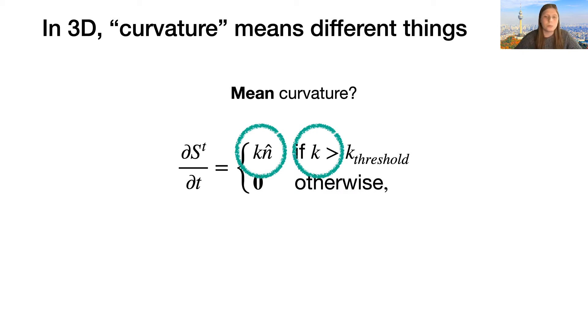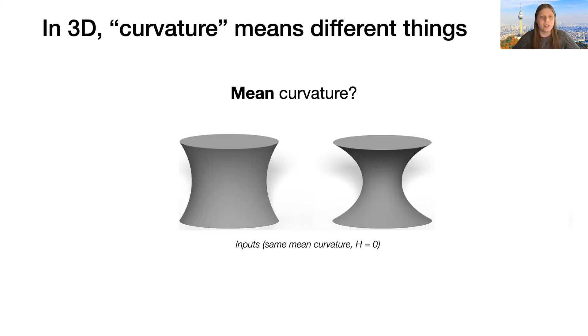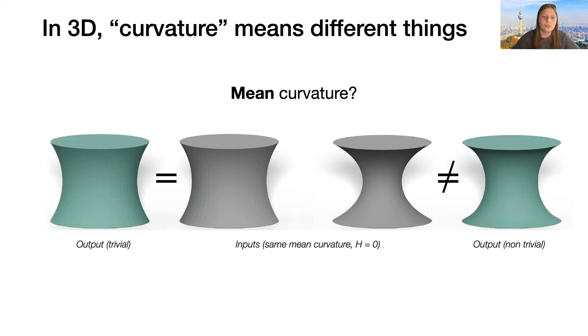The first candidate would be mean curvature, something we are used to seeing in geometric flows. However, it is easy to see that mean curvature alone cannot determine whether a point on the surface should move or not. Since we can design shapes with the same mean curvature, in this case 0, and yet one of them differs from the closing, the one on the right, but the other one doesn't. So one has trivial closing, the other one doesn't, despite having the same mean curvature. So mean curvature alone cannot determine whether a point should move in the closing or not.